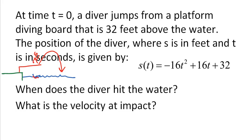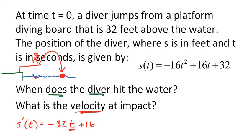I have a couple of questions: when does the diver hit the water, and what is the velocity at impact? To find velocity, I need the derivative of the position function, which is negative 32t plus 16. That is the formula for velocity at any single time t. The only issue is I need a specific time t — I need to figure out how much time it takes the diver to hit the water. Then I can plug that into the velocity formula.